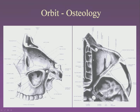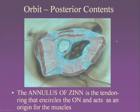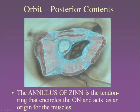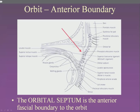On the transverse view you can see the lamina papyracea, the medial wall. The ethmoid is extremely thin, very similar to the orbital floor, which is the maxillary bone on top of the maxillary sinus. Looking deep into the orbit, we find the origin of all the eye muscles, which is the annulus of Zinn — a tendinous ring that encircles the optic nerve and many of the cranial nerves which enter the orbit through the superior orbital fissure.